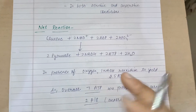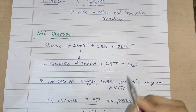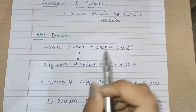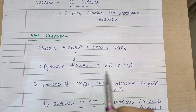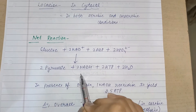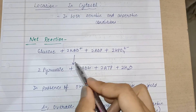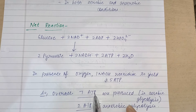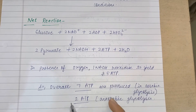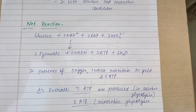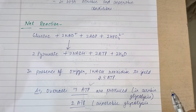In the presence of oxygen, NADH is reoxidized to yield 2.5 ATP each. So two NADH molecules equal 5 ATP. Therefore, net 7 ATP are produced in aerobic glycolysis. In anaerobic glycolysis, only 2 ATP are produced. So during aerobic glycolysis, a total of 7 ATP are produced. I hope this pathway of glycolysis is very clear to you. Thank you.